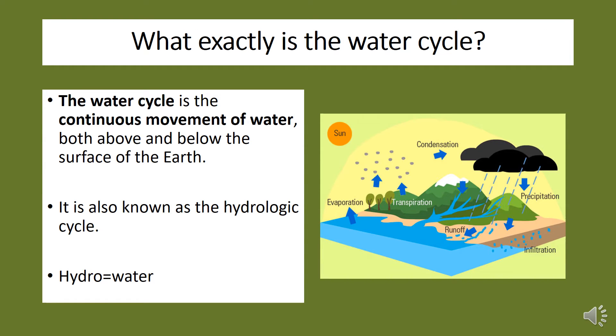So the water cycle is the continuous movement of water, both above and below the surface of the earth. It's also known as the hydrologic cycle.